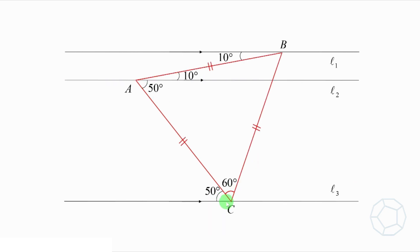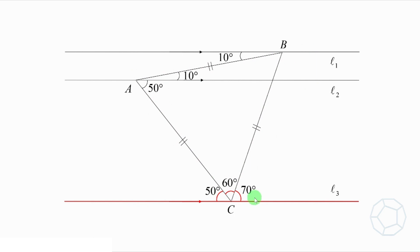Now, if we focus on the red equilateral triangle, then the angle at C is 60 degrees. On the straight line L3, the sum of three angles is 180 degrees. Therefore, the angle on the right is 70 degrees.